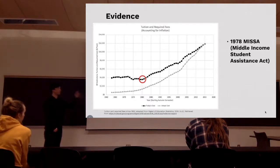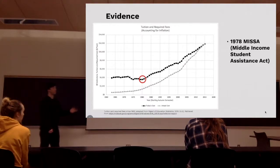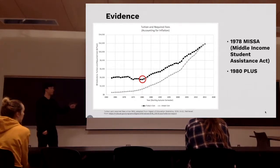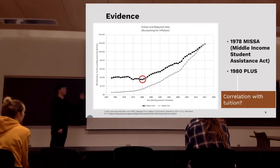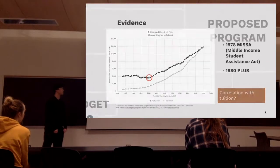Firstly, there is the MISA Act, which was released in 1978, which allows every class of students to apply for federal aid. And in 1980, another act called PLUS was released, which allows the parents of every class to apply for aid. We can see that there is a positive correlation between the increase of tuition and the release of these two acts.